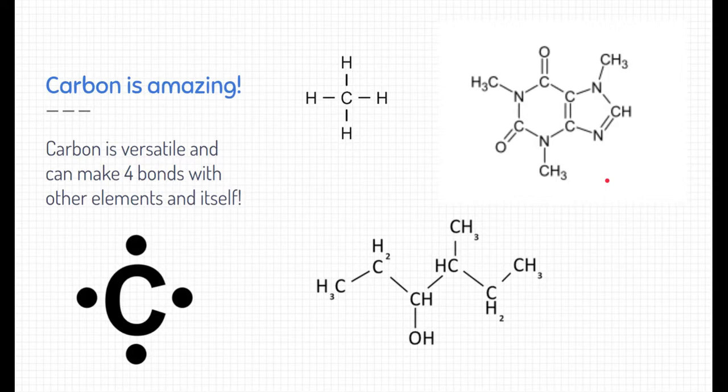Carbon, as we stated before, is the backbone of organic chemistry. It's so versatile. And the reason for that is because if you take a look at its electron dot structure in the lower left-hand corner, it has four valence electrons and can make four bonds with other elements and itself, which is very unique. And you can see the various formulas and structures that carbon can make being the backbone of many organic compounds.